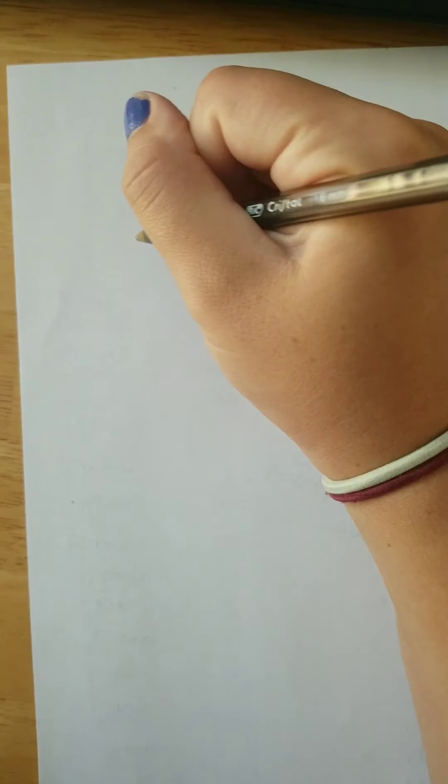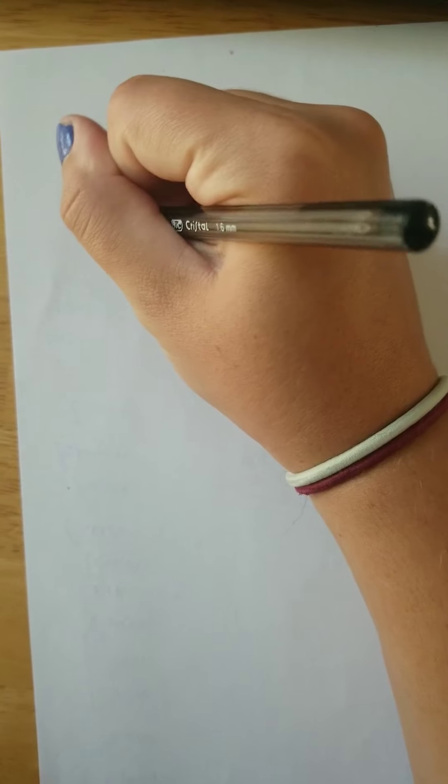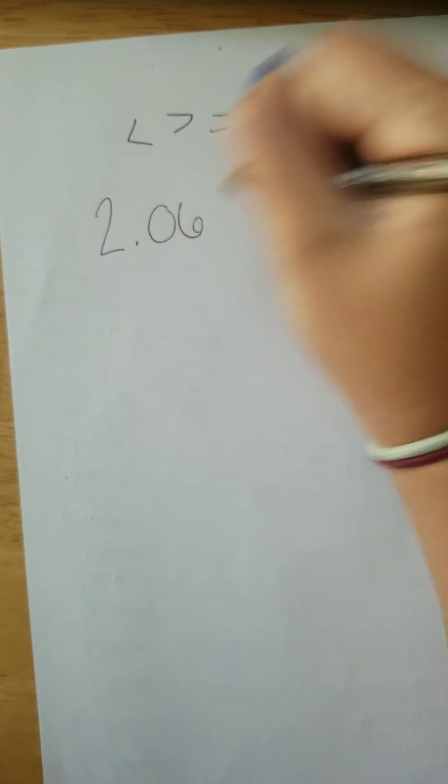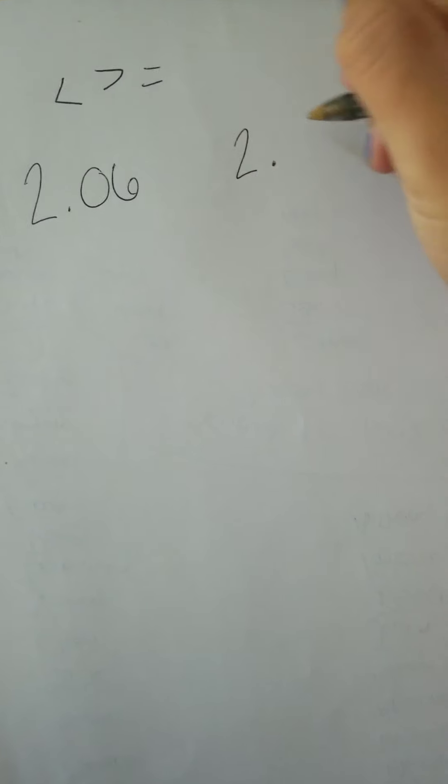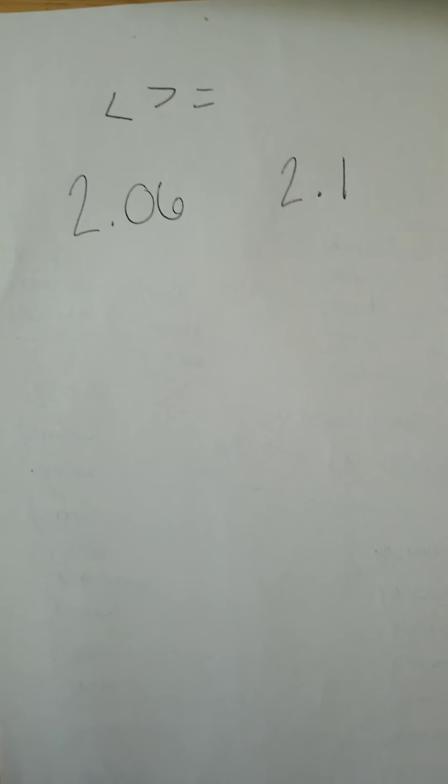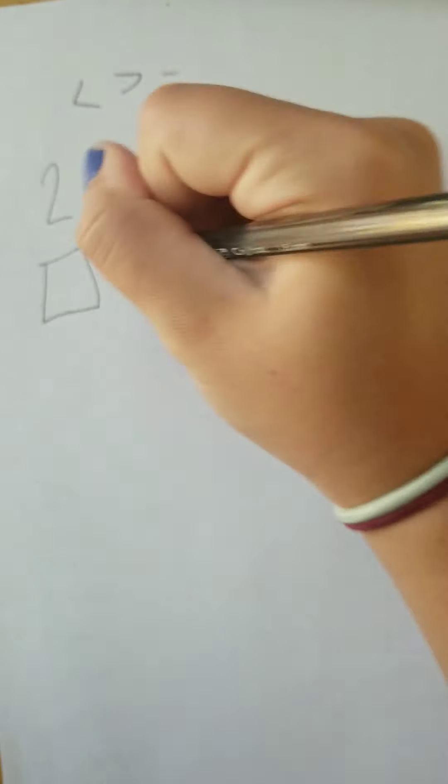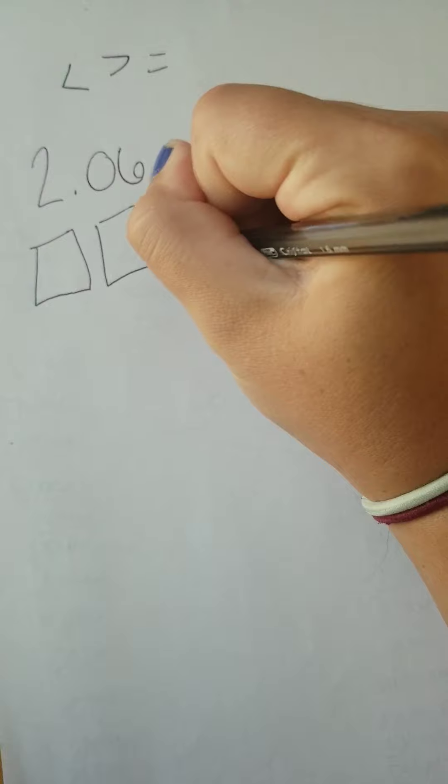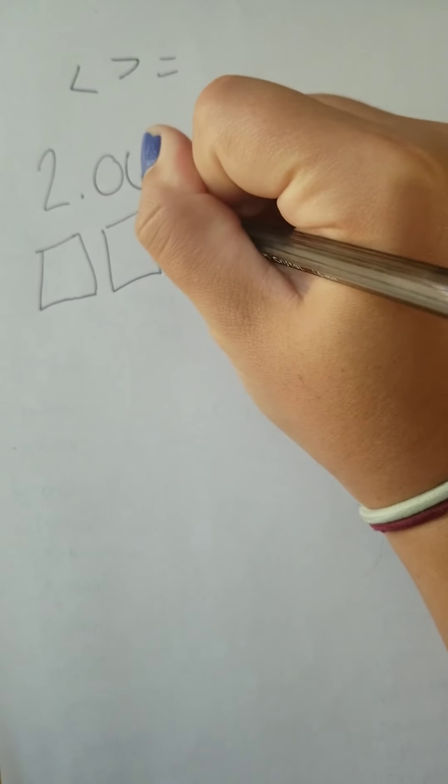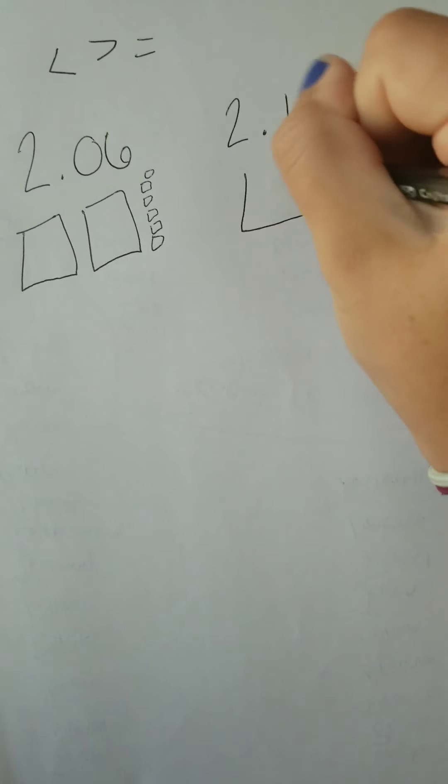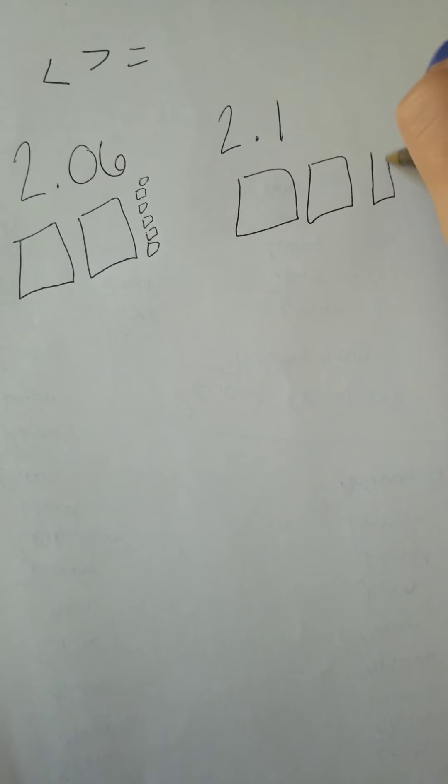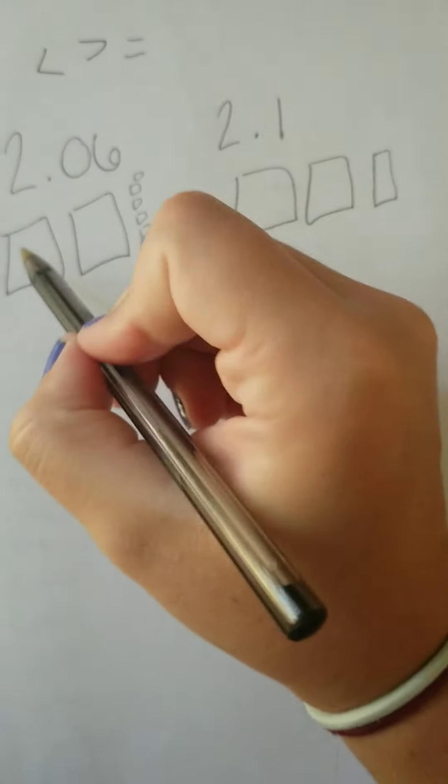So one way that we can use is by drawing our pictures, which we've done before. So if I gave you two and six hundredths and two and one tenth, I could draw these pictures. There's a hole, there's a hole, and then one, two, three, four, five, six. There's a hole, there's a hole, and a tenth.